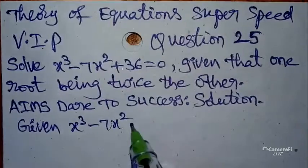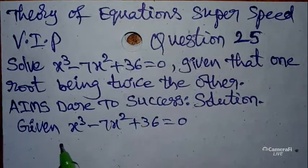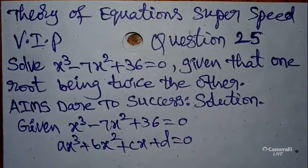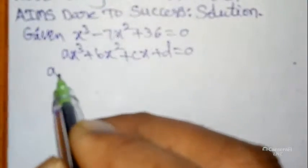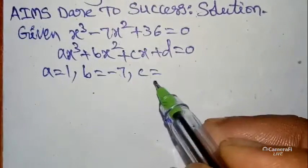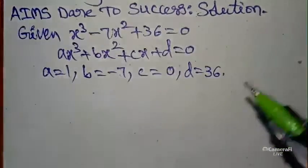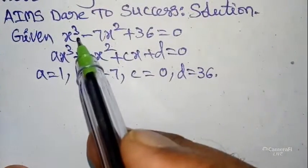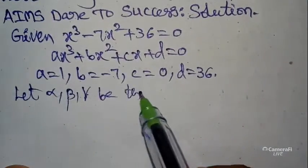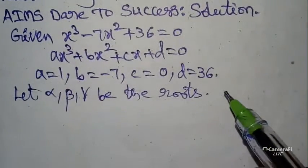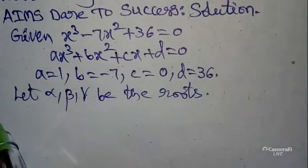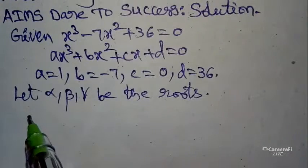Given: x³ - 7x² + 36 = 0. This is in the form ax³ + bx² + cx + d = 0. Comparing, we get a = 1, b = -7, c = 0 (there is no x term), d = 36. The degree is 3, so we take three roots: alpha, beta, gamma as the roots of the given equation.